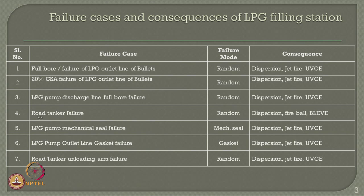Other failure cases include LPG pump discharge line full bore failure, rope anchor failure, LPG pump mechanical seal failure, LPG pump outlet gasket failure, and the road tanker unloading arm failure. Except for one specific case, all remaining failure modes are essentially random in nature — except for material failure as in the case of gasket failure. If a mechanical component's failure mode is completely attached to a mechanical fault, for that specific release one can also perform an FMEA to improve the design so that the seal does not fail.